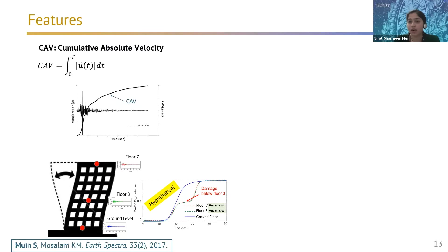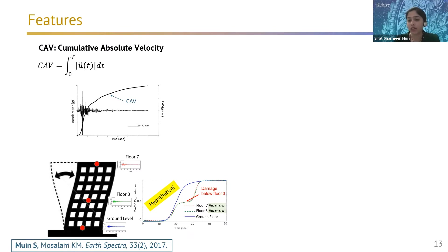The idea behind the damage detection technique is that when excited by the same ground motions, sensors at different elevations show similar dynamic trends. Any change in dynamic properties — mass, stiffness, or damping — due to damage will induce a change in dissipated power, which is related to CAV. CAV trends will show a change when there is damage. In our paper, we provided experimental examples and case studies of real instrumented buildings, showing that CAV is a good damage feature with a very distinct change in pattern.